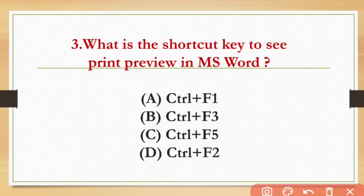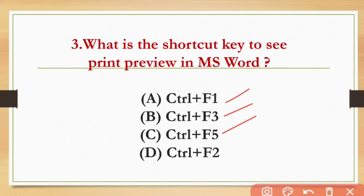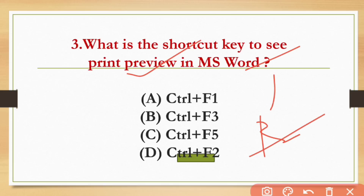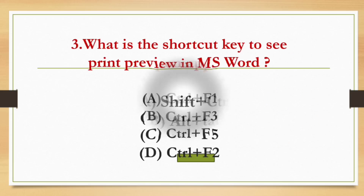What is the shortcut to see Print Preview in MS Word? The options are Ctrl+F1, Ctrl+F3, Ctrl+F5, and Ctrl+F2. The shortcut to see Print Preview in MS Word is Ctrl+F2.